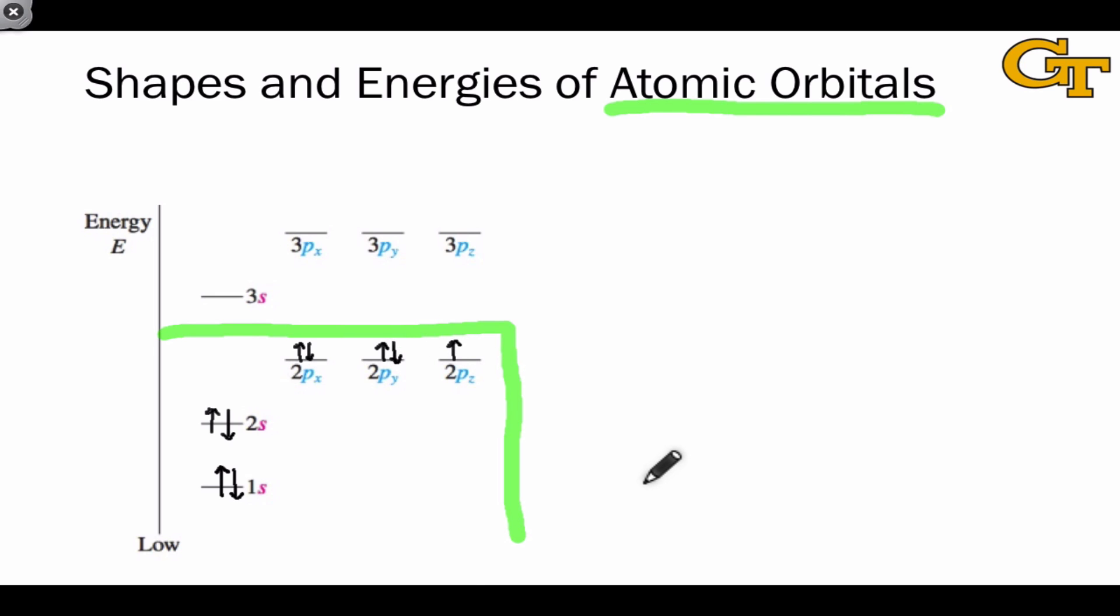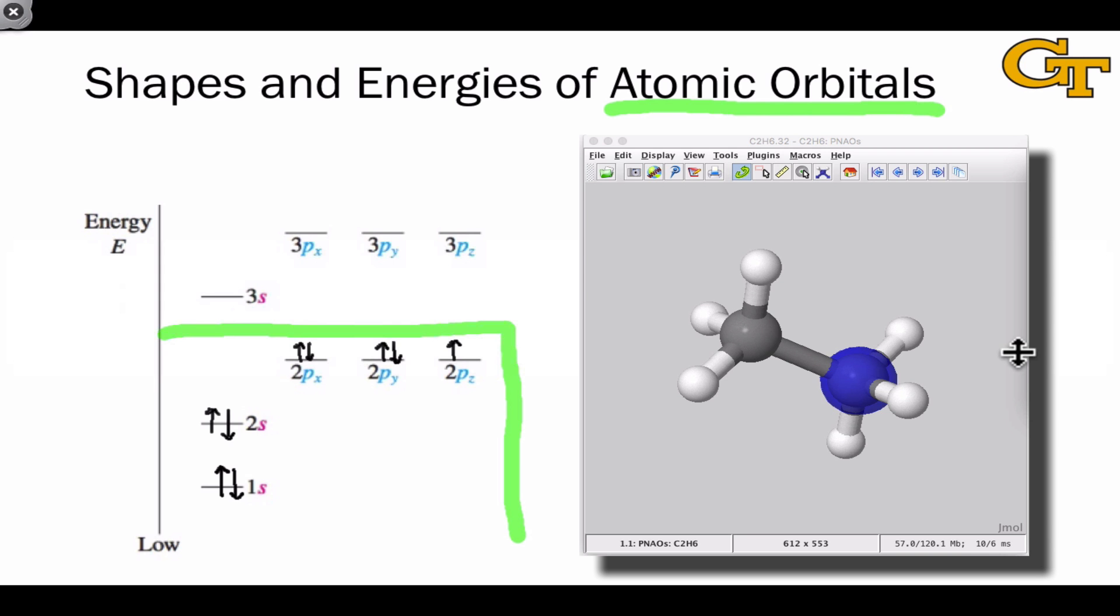Let's take a moment to review the shapes of the atomic orbitals by looking at them in the context of the ethane molecule. Here's the ethane molecule.